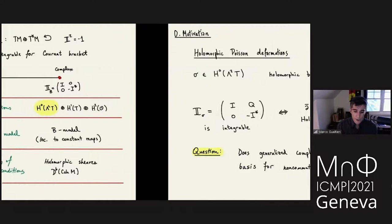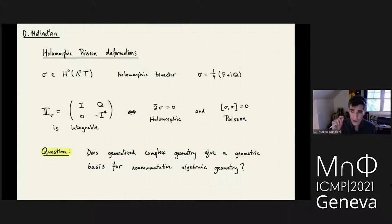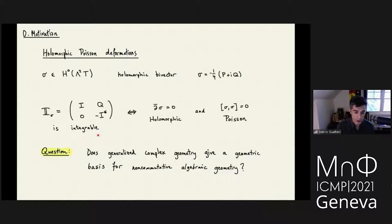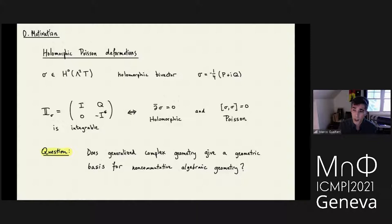Let's focus on these non-commutative deformations — Poisson structures. If I choose a section of H⁰ of ∧²T, a holomorphic bivector, I can write it in terms of real and imaginary parts and put this information together to get a generalized complex structure in between. It looks almost like a complex structure because of the diagonal elements, but it has this Poisson structure. For integrability, the condition is equivalent to this bivector being holomorphic and Poisson — defining a Poisson bracket on holomorphic functions. The main question, which we've had for almost 20 years, is: does this indicate that generalized complex geometry gives us a geometric approach to studying non-commutative algebraic geometry?